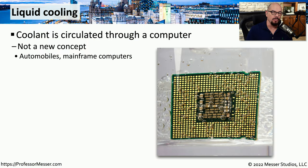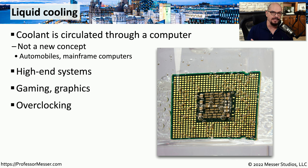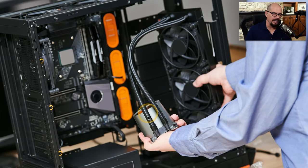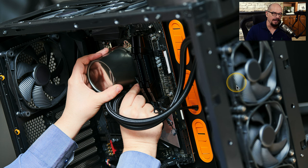Instead of using air to cool your system, you might want to use liquid. This is the same type of cooling you might see in an automobile or a mainframe computer, where you're using cool liquid — very often cool water — to bring the temperature down of these components. This is something you might commonly see on higher-end systems that need a very effective form of cooling, especially if you're doing gaming or graphics work, or maybe overclocking a system and therefore creating more heat than usual. Here's a liquid cooler for CPU cooling. The connection to the CPU has a block, with an in and out connection on that block, and the liquid then flows to a radiator. There are fans that blow air through the radiator to cool the liquid inside. The installation has the radiator receiving cool air from the outside, and the liquid is cycled through the CPU block and back to the radiator.